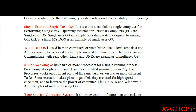Multi-user OS is like a mini computer or a mainframe that allows the same data and applications to be accessed by multiple users at the same time. Here, multiple users can access the operating system simultaneously. Linux and Unix are very good examples of multi-user OS.